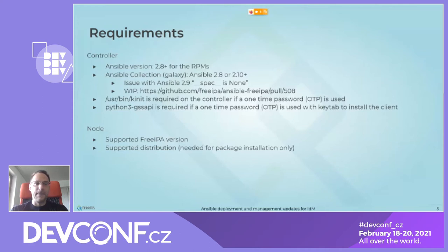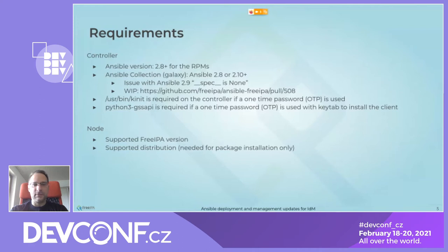For deployment, you additionally need kinit, so you will need Kerberos utilities. As soon as you want to use a one-time password, python3-gssapi is also required. If you use a keytab for installing the client on the node, you need a supported FreeIPA version and a supported distribution — meaning packages for FreeIPA must be available, along with the files in ansible-freeipa defining which packages need to be installed.